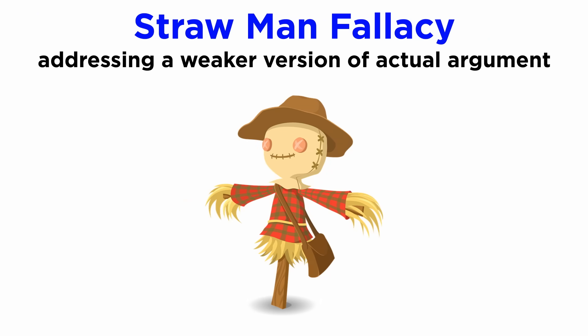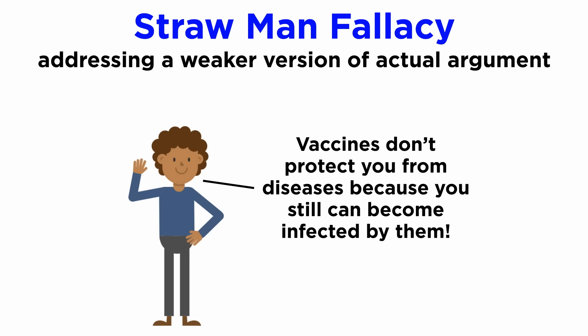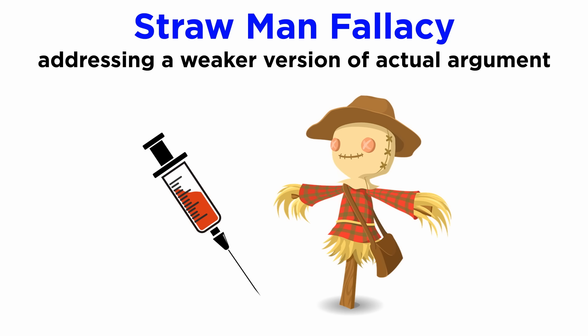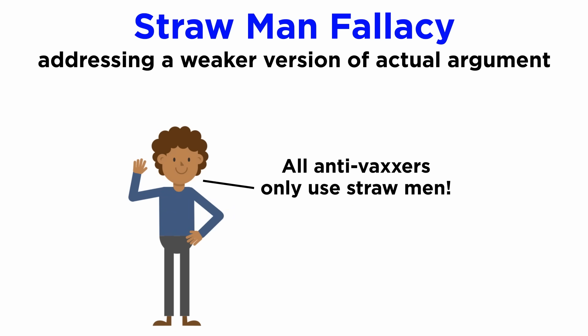Another one is the straw man fallacy, similar to the appeal to absurdity, where a weaker version of an argument is used in an attempt to disqualify it. Such as when people say that vaccines don't protect you from diseases because you can still become infected by them, when the objective of vaccines is to diminish infection rates and severity, which they do. By focusing on a weak distortion of the real goal of vaccines, negationists sometimes attempt to discredit them instead of dealing with the actual science and evidence behind them. And of course, we'd also be committing this fallacy if we said that all negationists use a version of this to question science — this is only a brief example and not truly representative of their position.